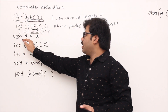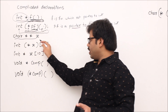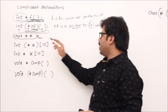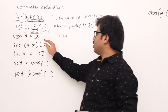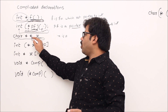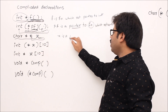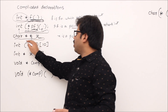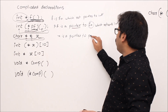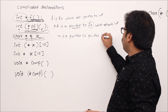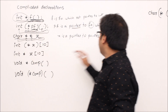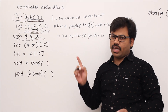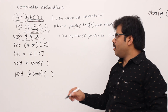Now: 'char **x'. Start at variable x, go right — reach dead end. So 'x is a...' — go leftmost. First star: pointer to. Second star: pointer to. Then char. So 'x is a pointer to pointer to char' — that means a double pointer.